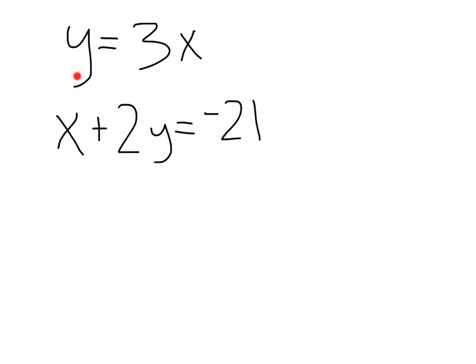Here we've got a system. y equals 3x and x plus 2y equals negative 21. The first thing we're looking out for is do we have a variable by itself? Do we know what that is, either x or y? Well, I know what y equals here. I've got y equals 3x. And since I know that, I can take this 3x and plug it into my second equation for y.